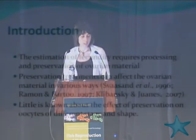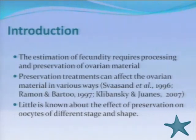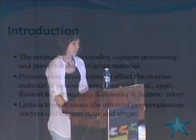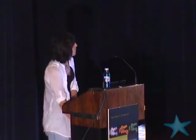Let's start with some background information. The estimation of fecundity requires processing and preservation of ovarian material. This ovarian material can be affected in various ways by preservation treatments — it can decrease or increase the weight of the gonad or the oocyte size — as already referred to in the bibliography many times. Although little is known about the effect of preservation on oocytes of different states and shapes.